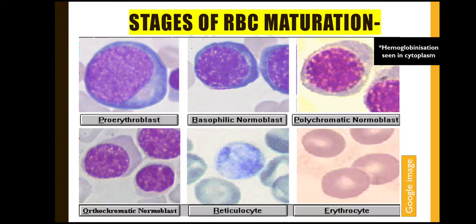Before going on to the main topic, we know that RBCs are produced by the process of hematopoiesis. This occurs in intrauterine life in the yolk sac by the third week, and by the third month it occurs in the liver. By the fourth month, hematopoiesis occurs in the bone marrow. When a child is born, hematopoiesis occurs entirely in the bone marrow, and at birth all the marrow in our body is red marrow. By puberty, at various sites this red marrow gets replaced by yellow marrow, and only in a few sites like the heads of long bones or flat bones like the sternum, ribs, vertebral spine, or skull bones does the red marrow remain.